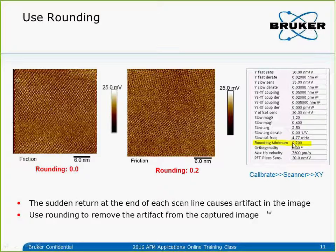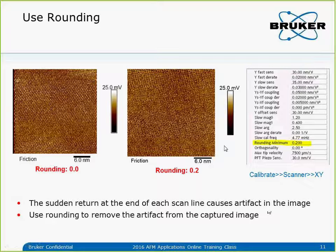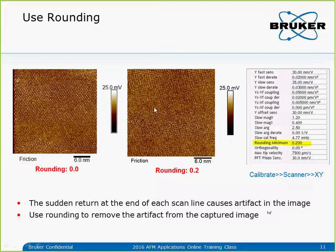Comparing the two images — same area, same 30 nanometer scan size — the only difference is that on the left I didn't apply any rounding, and on the right I applied 0.2 rounding. With rounding, there are no edge artifacts. To control drift, one thing I want to mention is do not use double-sided tape to mount the sample — it tends to introduce a lot of drift. Use silk glue or epoxy to mount it firmly.